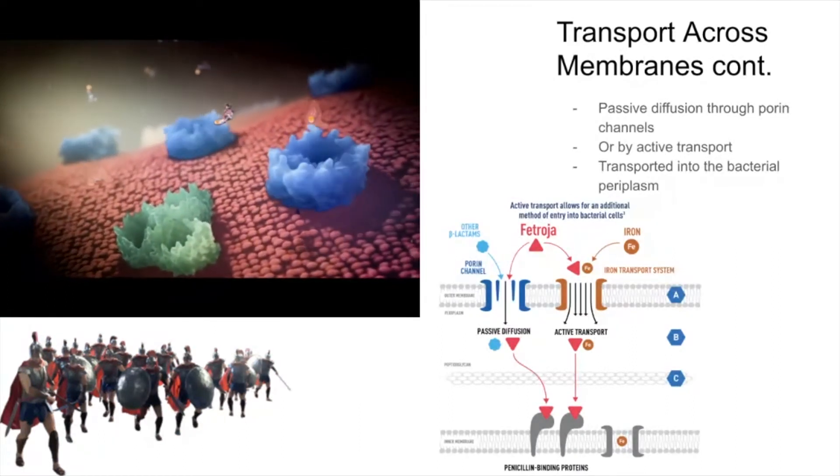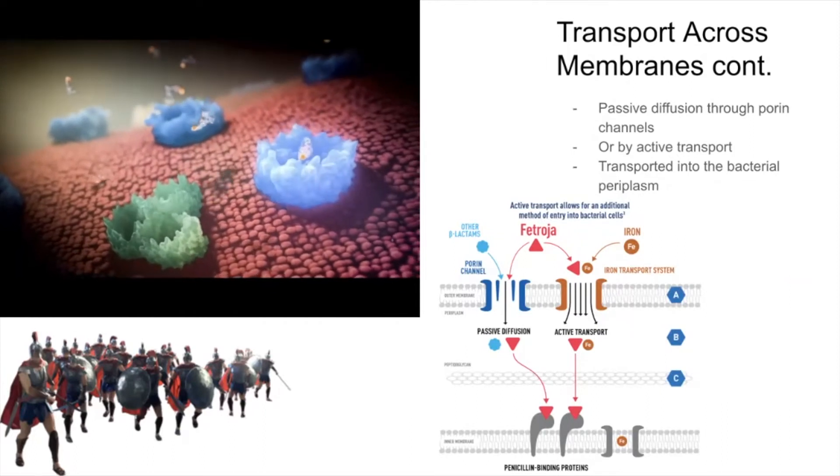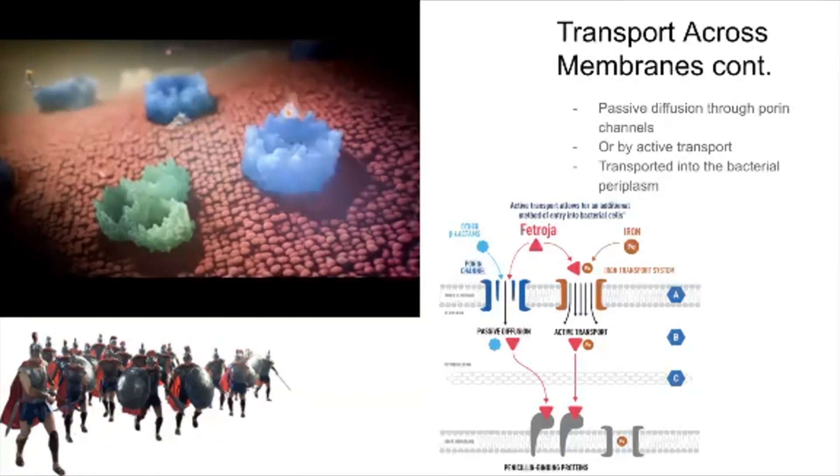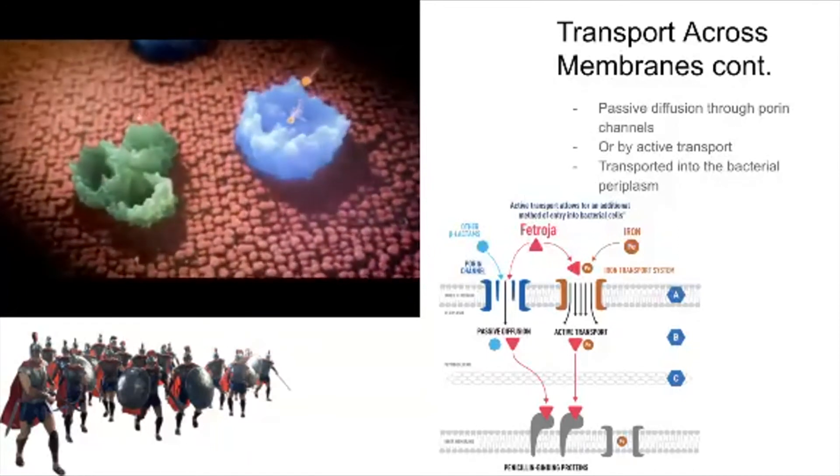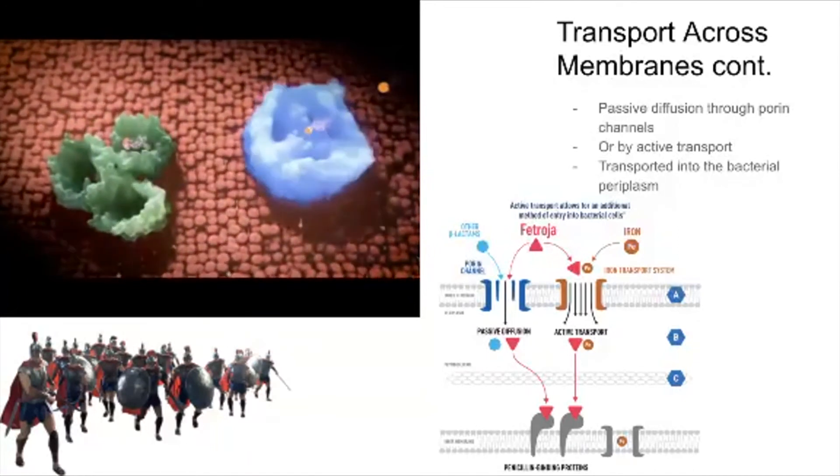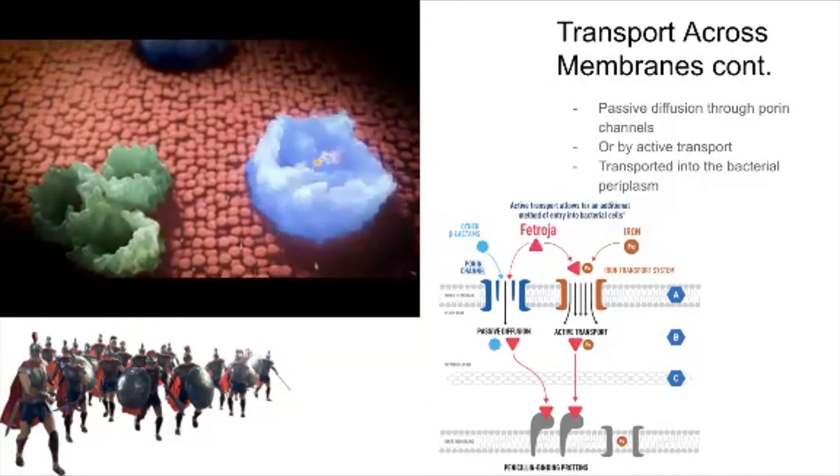The complex of Fetroja and iron binds to the highly expressed siderophore iron transporters on the gram-negative outer membrane and is actively transported into the bacterial periplasm.